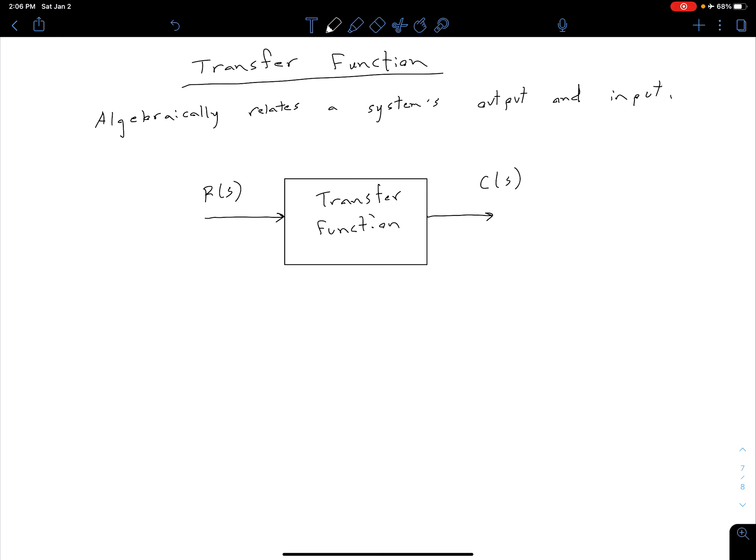We can think of that as a block diagram, as I've shown here, where we have some input in the frequency domain R(s) being fed into a block, that's the transfer function, and then on our output side we have our output C(s).